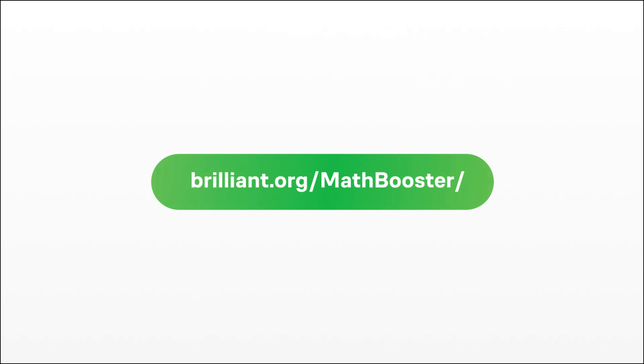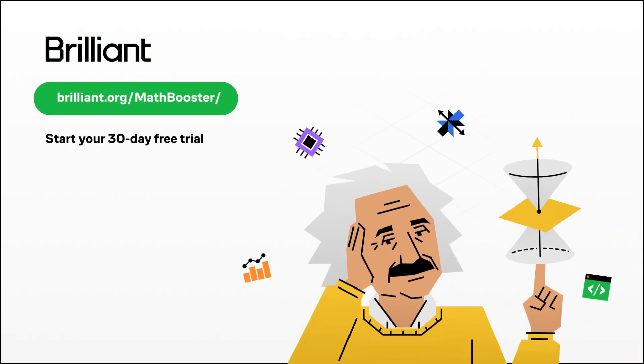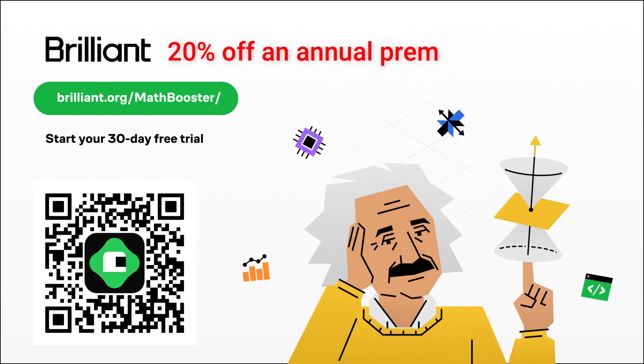To try everything Brilliant has to offer for free for a full 30 days, just visit brilliant.org/mathbooster or scan the QR code on screen, or you can click on the link in the description. You will also get 20% off an annual premium subscription.